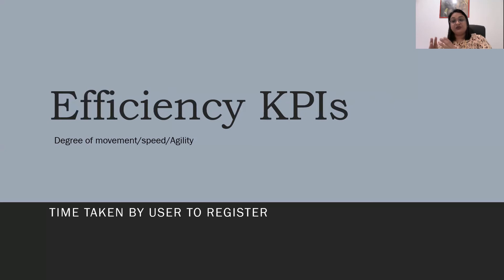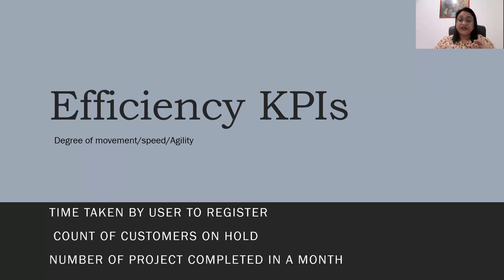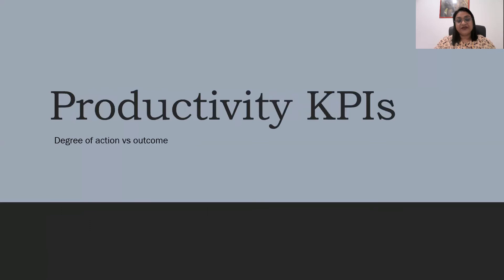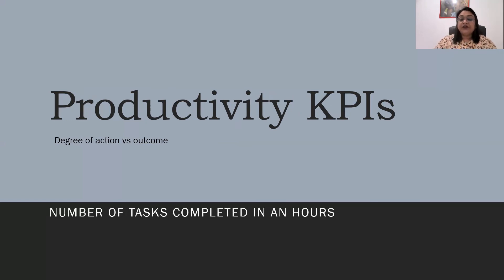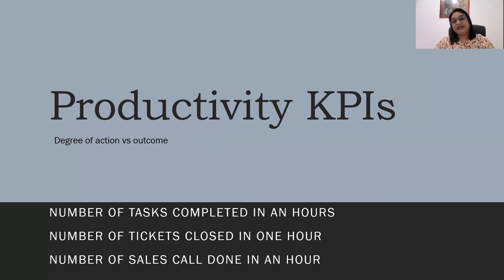Efficiency KPI is from the customer perspective — how does a customer feel about it? Examples include the count of customers kept on hold and the number of projects completed in a month. The next KPI is the Productivity KPI, which is from the organization's perspective — the number of actions versus outcomes. Examples include the number of tasks completed in an hour, the number of tickets closed in an hour by a help desk, and the number of sales calls done in an hour.